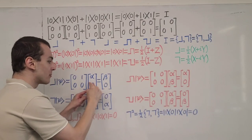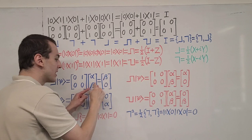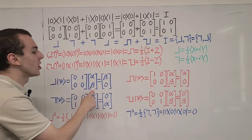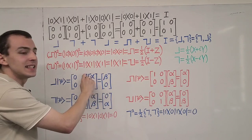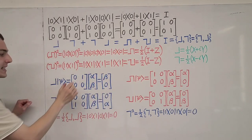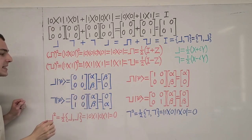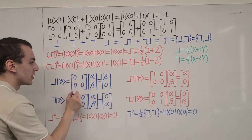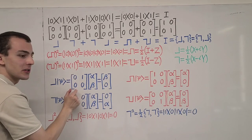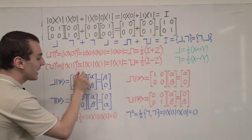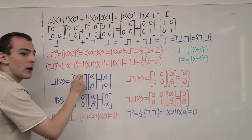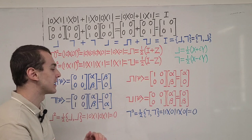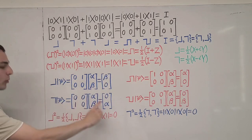What is the effect of the lowering operator on this general state? You can see that it takes the coefficient beta and moves it down — the coefficient that used to belong to the first excited state is now the coefficient of the ground state, and alpha disappears. If we examine the columns of this matrix, we can see what happens to the basis states: the ground state disappears — it gets destroyed — but the excited state gets turned into the ground state. This is lowering: we're lowering from the excited state down to the ground state.